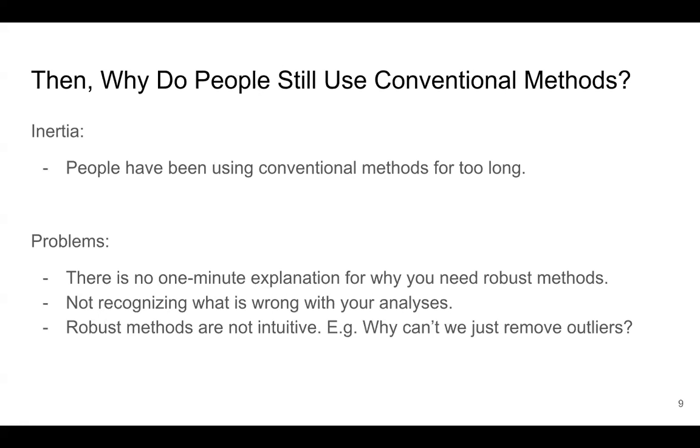And also, there are some more problems. First, there's no one-minute explanation for why you need robust methods. And second, you don't seem to recognize what's wrong with your analyses. And finally, robust methods are not so much intuitive. For example, why can't you just remove outliers? Well, it doesn't work that way. Spoiler alert, next chapter, we're going to be talking about outliers.